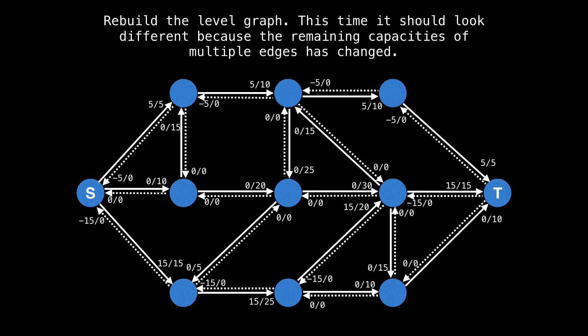Now we reset and rebuild the level graph. This time it should look different because the remaining capacities of multiple edges has changed. Start at the source, expand outwards taking all edges with a remaining capacity greater than zero, which in this case is only the middle edge leading us to the red node. The top edge going outwards from the source is saturated and so is the one going downwards. We keep doing this and building the level graph layer by layer.